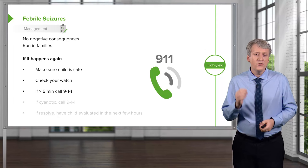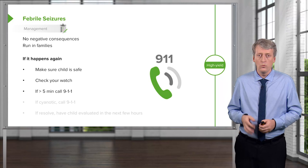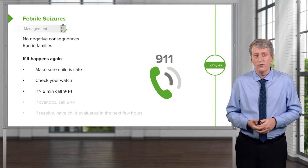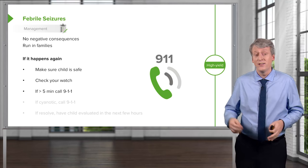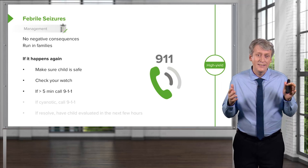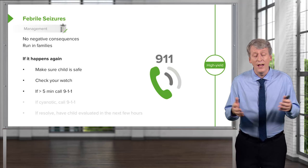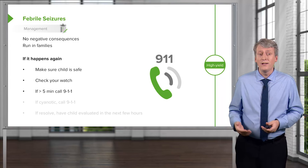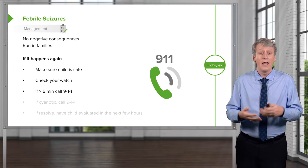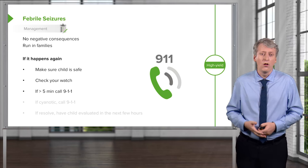If the seizure lasts more than five minutes, the family should call 911. They should not place the child in their car and drive at 100 miles an hour to the nearest ER, because if they had an accident, they'd have both an accident and a seizing child. Additionally, in the United States an ambulance typically arrives within five to ten minutes and brings anti-seizure medications like benzodiazepines — so the seizure can actually be stopped faster by calling 911 than by rushing to the hospital.